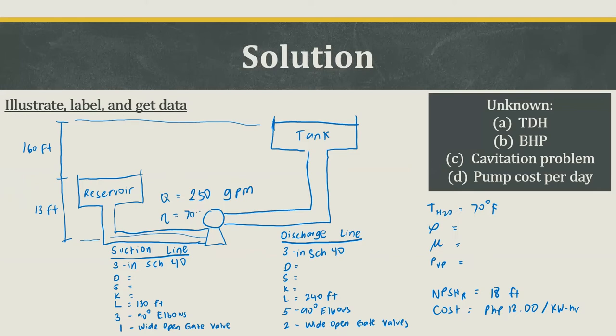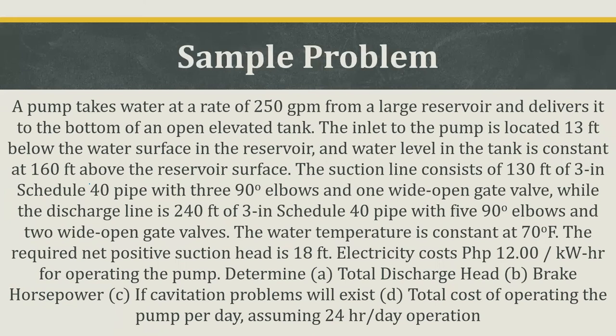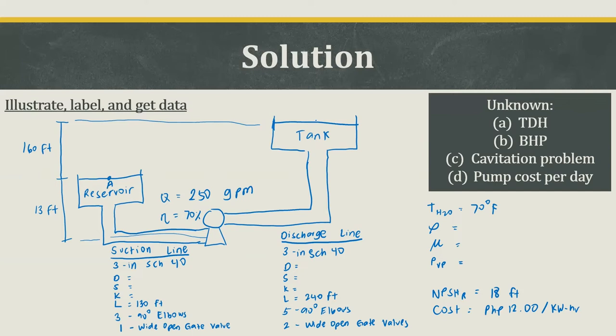Since it was not mentioned, we can assume the reservoir is open to the atmosphere as well, similar to the tank. Since there's no mention of any pressure on the reservoir side, we assume atmospheric pressure on both sides. Let's call the reservoir surface point A and the tank water surface point B. The pressure at A is atmospheric, which is 14.7 pounds force per square inch, and the same applies to pressure at B.